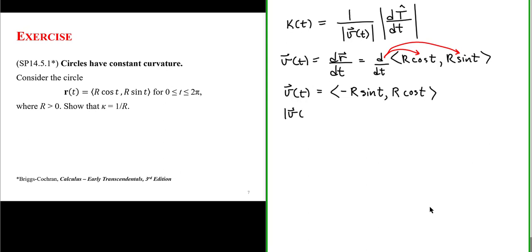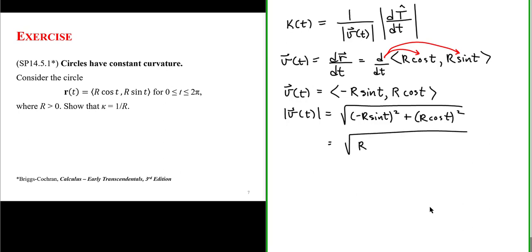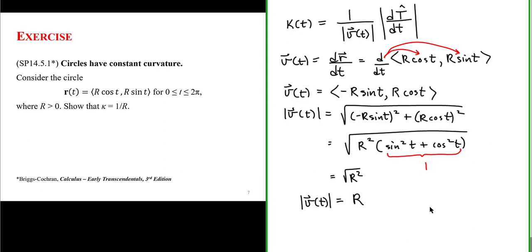The speed, otherwise known as the magnitude of velocity, is equal to the square root of the x component of velocity squared plus the y component squared. This gives us the square root of r squared times the quantity sine squared of t plus cosine squared of t. Since sine squared of t plus cosine squared of t equals 1, the magnitude of the velocity of our curve is simply r, the radius of the circle.